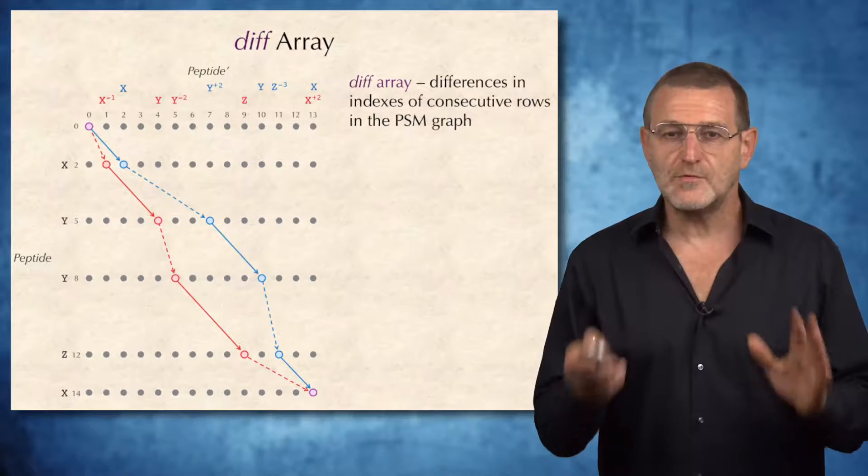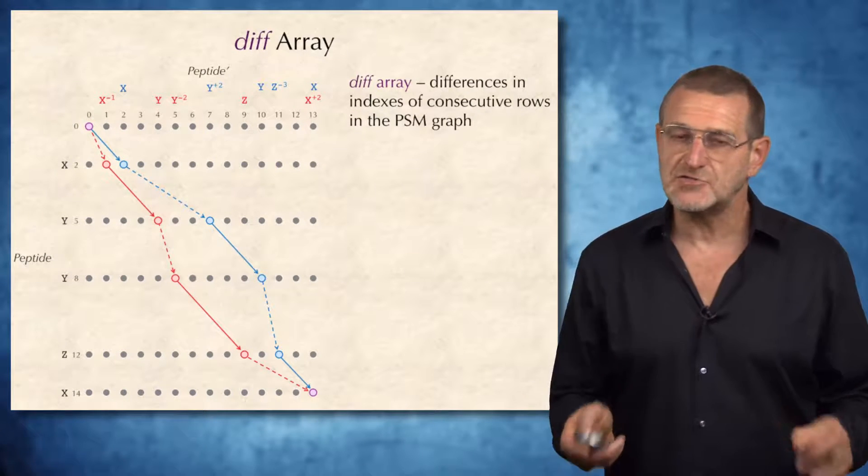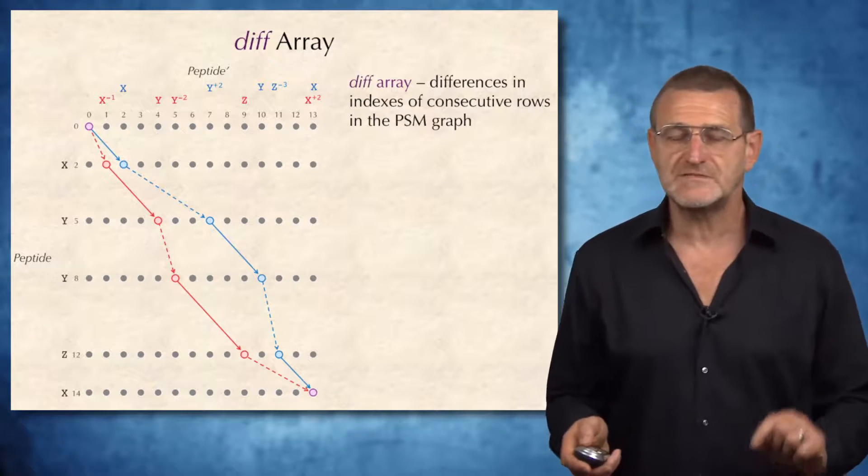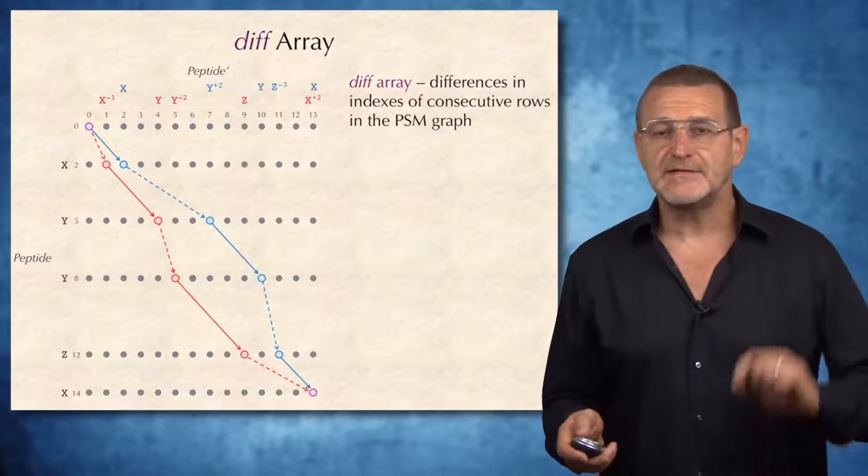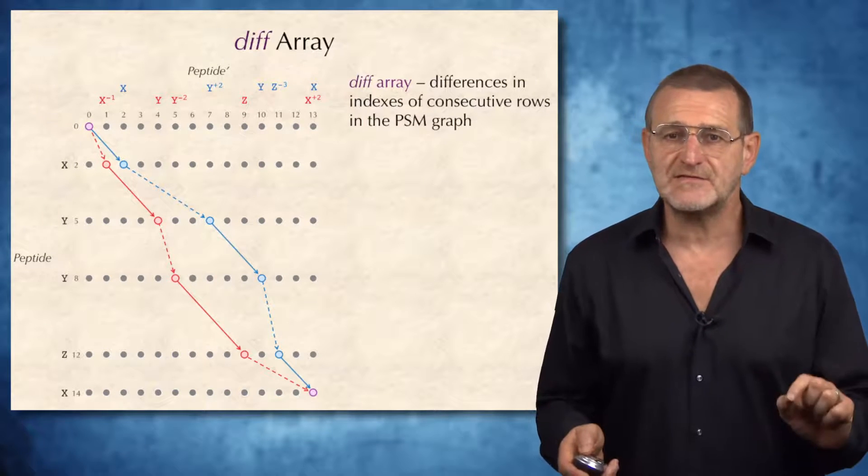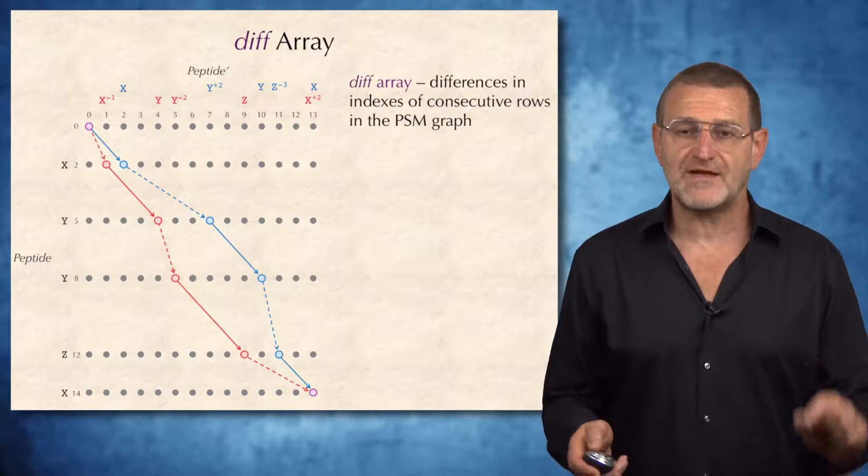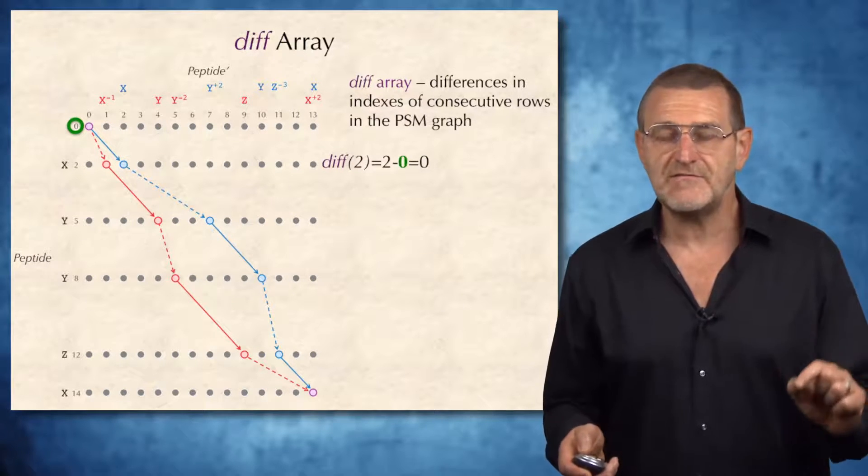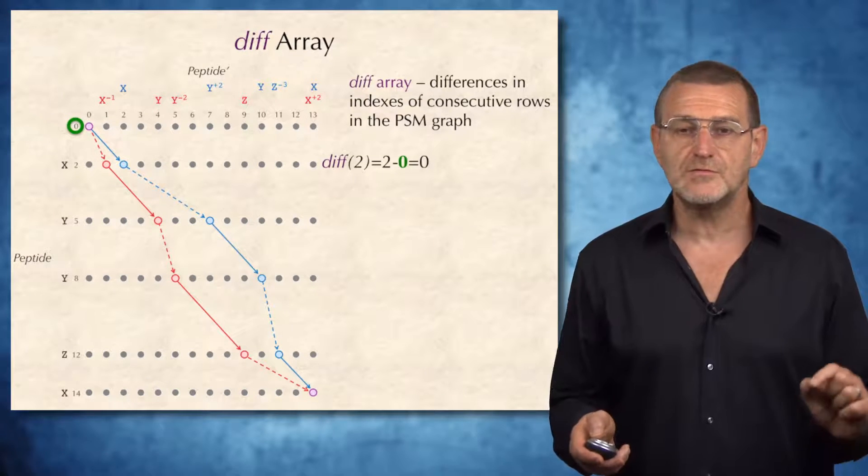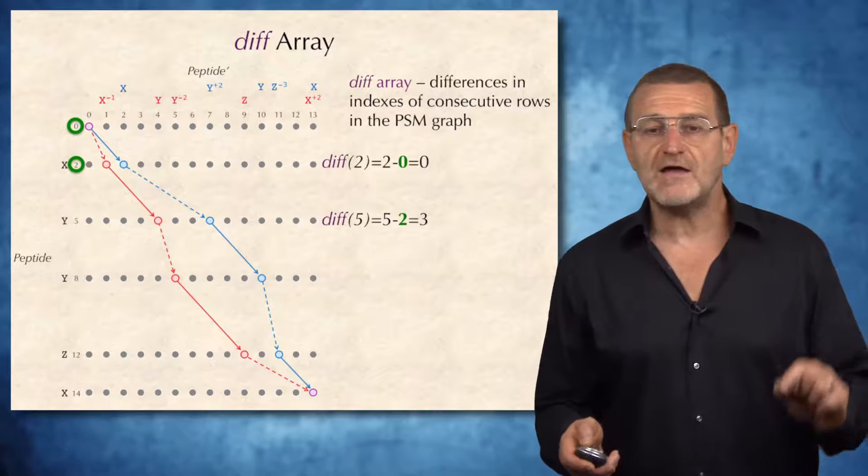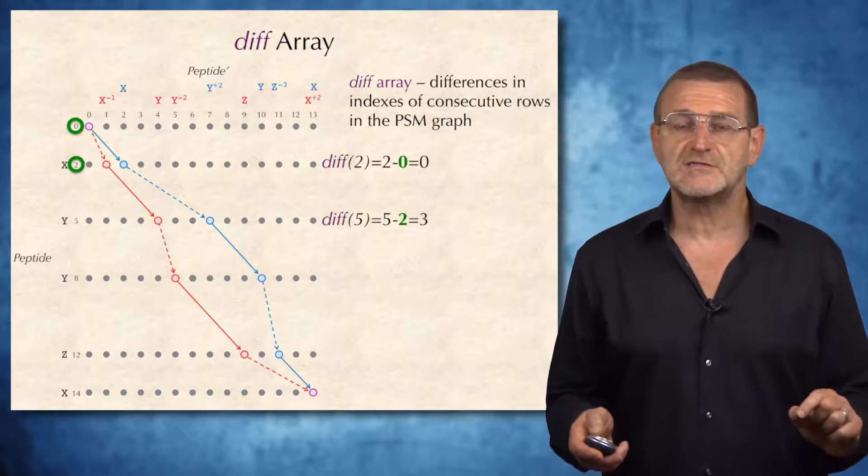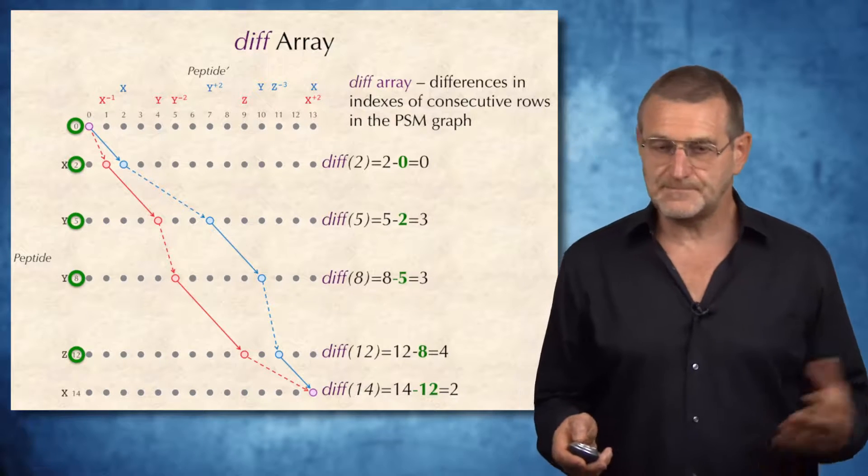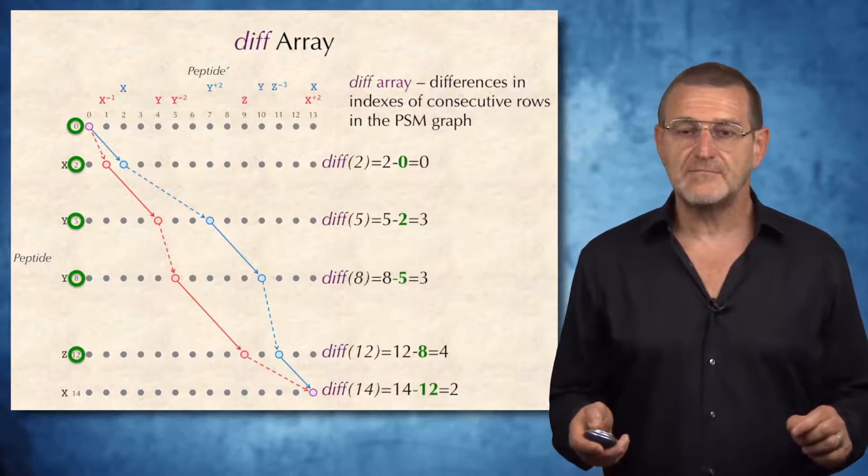Before you implement the spectral alignment challenge, let me clarify some implementation details for you. I will introduce the notion of the diff array. Diff array will simply represent differences in the indexes of consecutive rows in the PSM graph. For example, diff will be equal 2 minus 0, which is 2. Diff will be equal 5 minus 2, which is 3. And here are all the elements of the diff array presented.